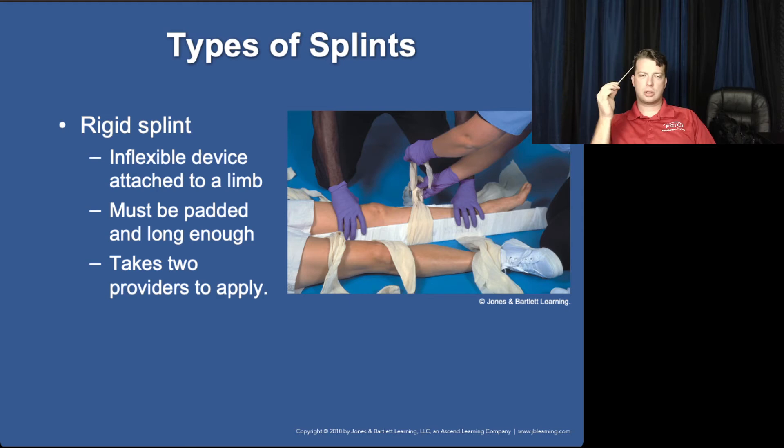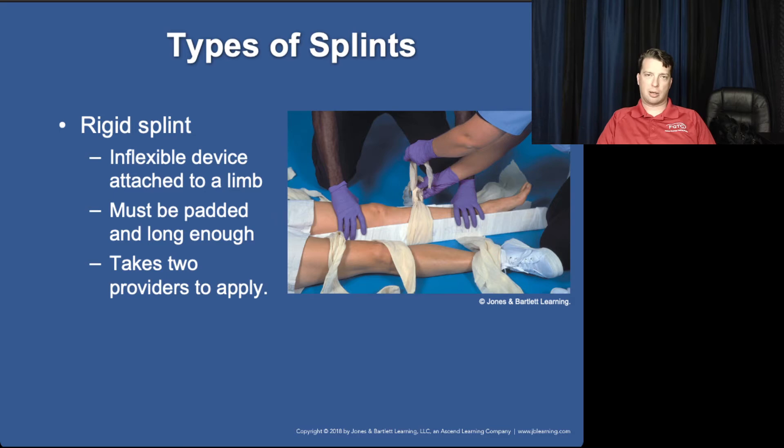Types of splints: rigid splints are the most easily applied but most difficult to use effectively, in my opinion. These are like a glorified Boy Scout splint — they're specially made and padded, but they just really are not a great splint option when other options are available. If it's all you got, you do it. I would rather take one or two board splints and, instead of individual triangular bandages, get a couple of big six- or eight-inch ace bandages or cling and wrap the whole extremity. That's the more effective way of doing this. It does take a minimum of two providers to apply a rigid splint.